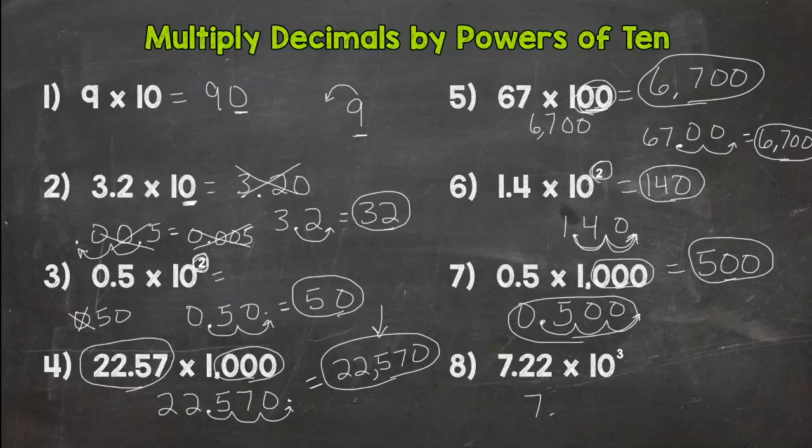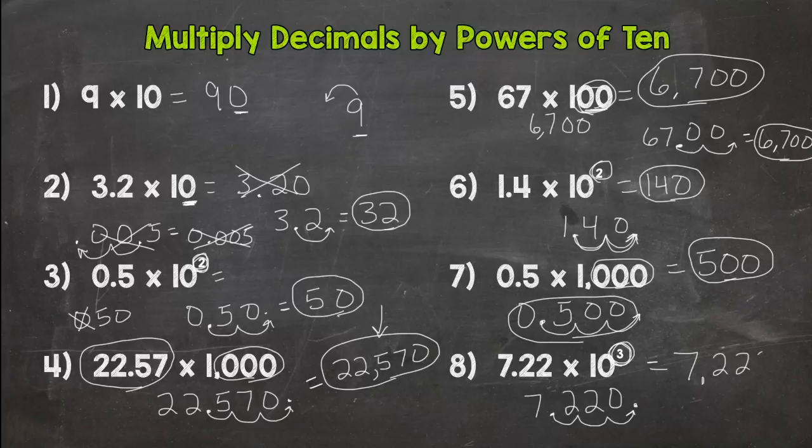And then number 8. 7 and 22 hundredths. How many times do you think you move the decimal? Hopefully you are thinking 3 because our exponent is 3. The exponent or number of 0s will tell you how many times to move the decimal. So 1, 2, 3. Fill with a 0. We get 7,220.